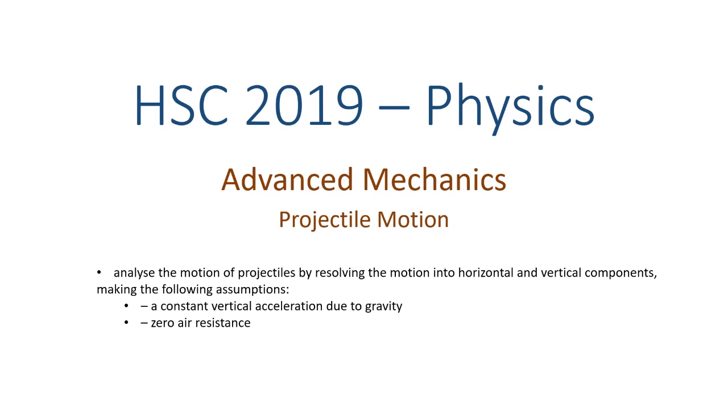Welcome to this series of videos where I will be going through the dot points for the new HSC physics syllabus. In this video we will be looking at the first dot point of the first module. The module is advanced mechanics, topic is projectile motion. We'll be analyzing the motion of projectiles by resolving the motion into horizontal and vertical components, making the following assumptions: a constant vertical acceleration due to gravity is present, and we have zero air resistance. So what does this all mean?